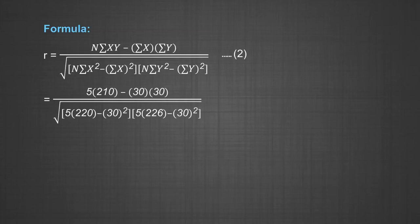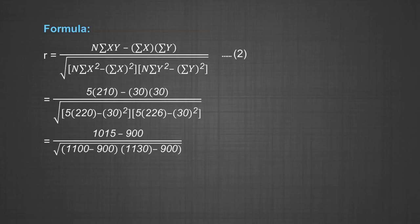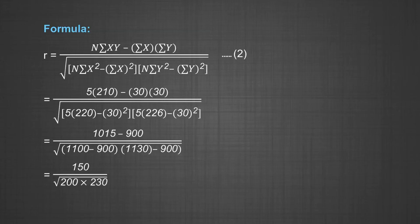Inserting the various values calculated in the table into the formula: [5×210 − 30×30] divided by the square root of [5×220 − 30²] times [5×226 − 30²]. This gives [1050 − 900] divided by the square root of [1100 − 900] times [1130 − 900], which simplifies to 150 divided by the square root of 200 times 230. The final value of R is equal to 0.7.